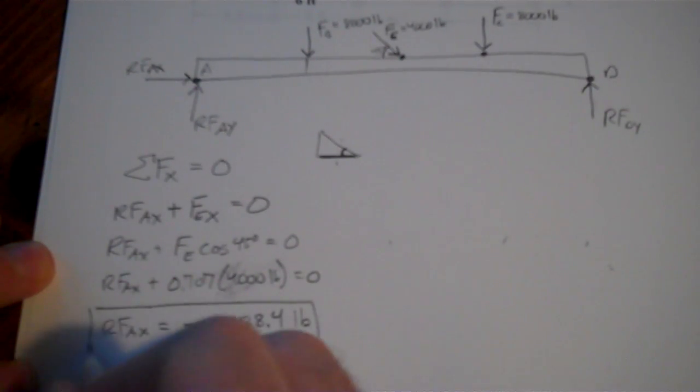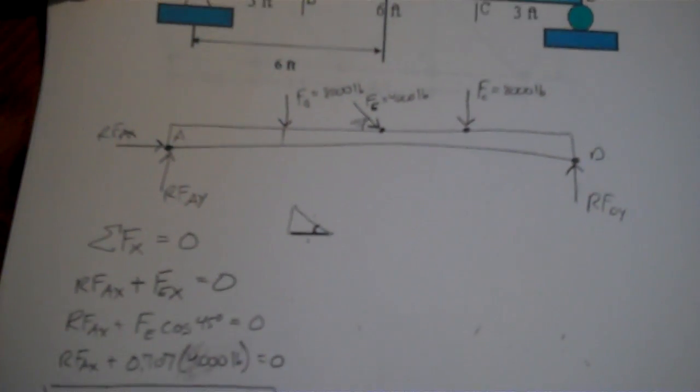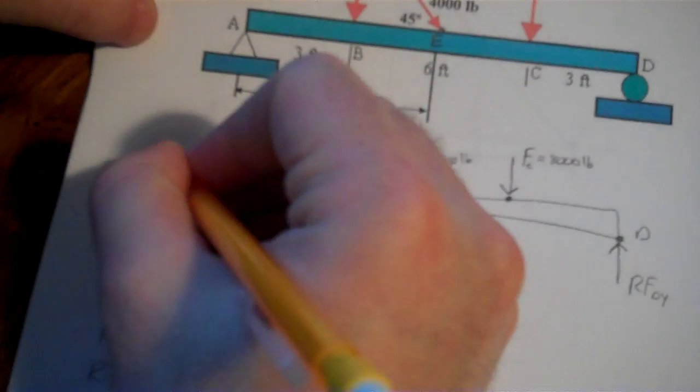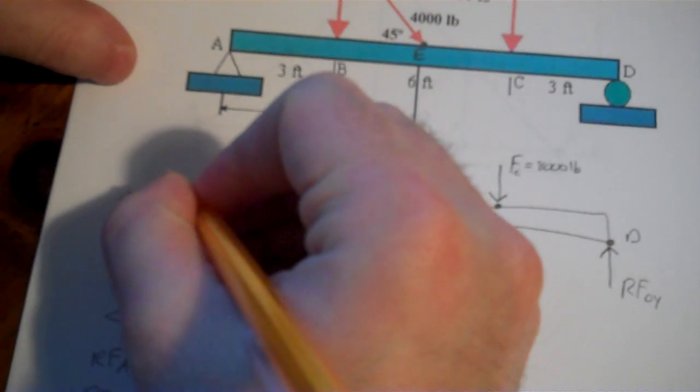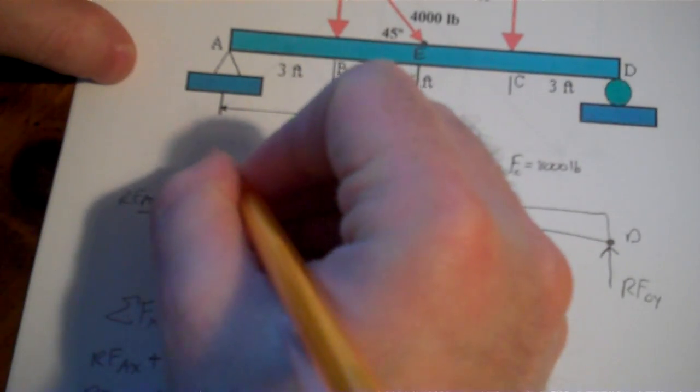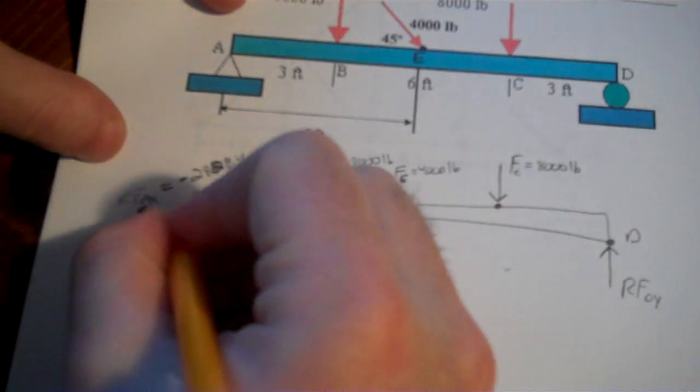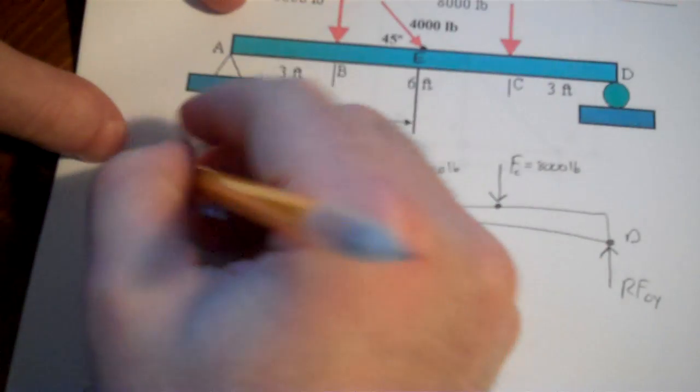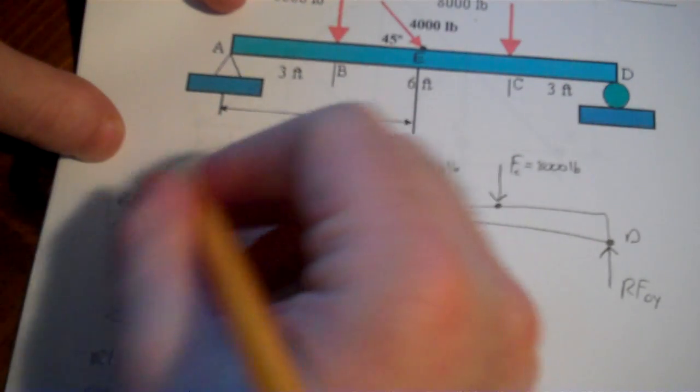All right, so that's negative 2828.4 pounds. We have one reaction force just from using one equation. Simple enough. But we have two more to figure out. So that was RFAx. So now we know that's equal to, I'm going to update my free body diagram. That's equal to negative 2828.4. Or I can change the direction of this on here. And if I change the direction, I don't need the negative anymore. Because again, negative, that's the only thing a negative would show.